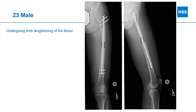Here we have a 23-year-old male who was undergoing limb lengthening of his left femur, which was progressing well. The bone was distracting and he was forming new bone in the distraction gap. But note how odd the bone looks in the tibia, which was not undergoing the distraction — there's this area that's clearly defined and looks more radiolucent than the surrounding bone.